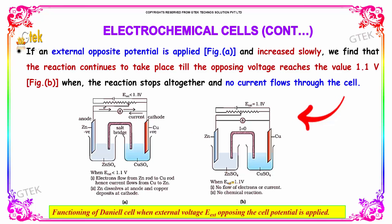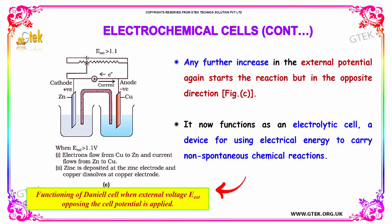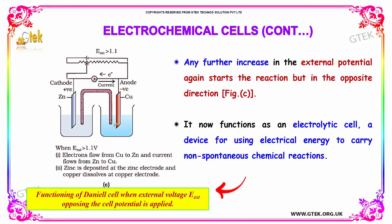When the external voltage is exactly 1.1 volt, there is no flow of current and no chemical reaction. Any further increase in the external potential again starts the reaction but in the opposite direction — zinc is deposited on the zinc electrode and copper dissolves at the copper electrode. It now functions as an electrolytic cell, a device for using electrical energy to carry out a non-spontaneous chemical reaction.